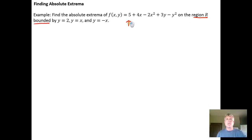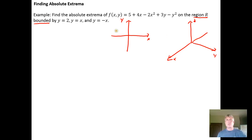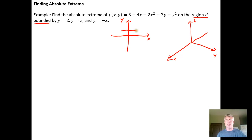The bounded region is going to be a region in the xy-plane, with the z-axis coming out of the board. Even though we usually graph functions of three variables in 3D format, it's easy to think about it in the xy-plane and then move it into the 3D system. So y=2 is a horizontal line, y=x and y=-x are diagonal lines. The closed bounded region is this triangular region, bounded by y=2, y=x, and y=-x.